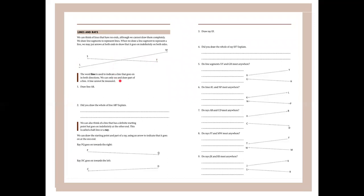The word 'line' is used to indicate a line that goes on in both directions. We can only see and draw parts of a line, and a line cannot be measured. An important difference: a line segment can be measured, but a line cannot. Draw line AB — you would have drawn the whole thing if you put arrows on both ends.